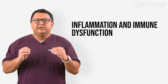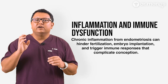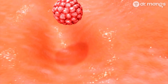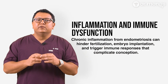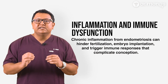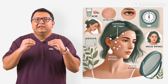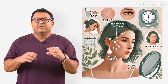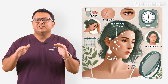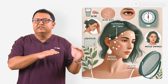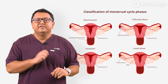Inflammation and immune dysfunction associated with endometriosis can create a hostile environment for fertilization and embryo implantation. This inflammation can also trigger an immune response that further complicates the conception process. Additionally, hormonal imbalances caused by endometriosis can disrupt the hormonal balance necessary for regular ovulation and a healthy menstrual cycle, which are critical for conception.